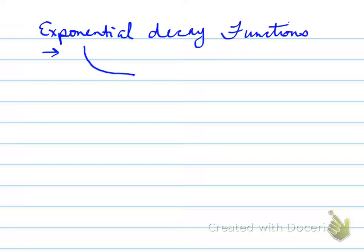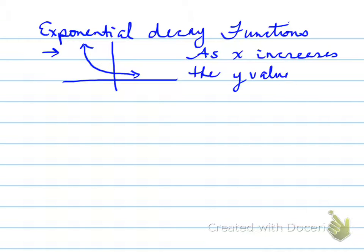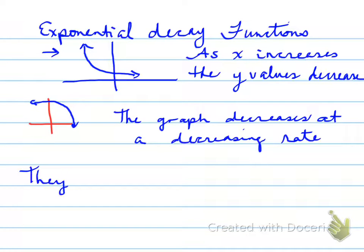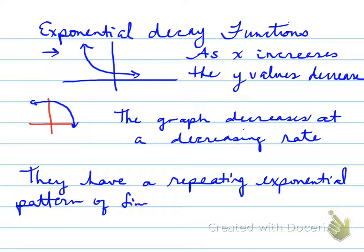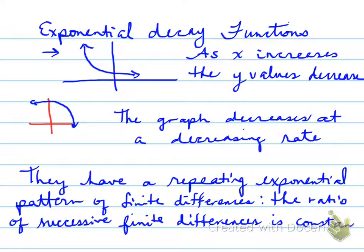All right, next, exponential decay functions. As x increases, the y values decrease. So it always looks like this. What's happening here is as x increases, the y values decrease. They're going downwards. So the graph decreases at a decreasing rate. That's a constant factor. They have a repeating exponential pattern of finite differences, which is called the ratio of successive finite differences is constant.